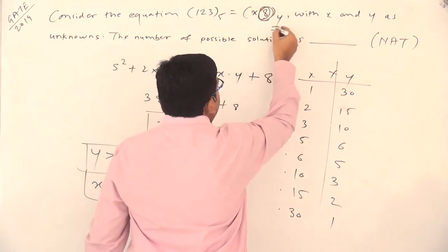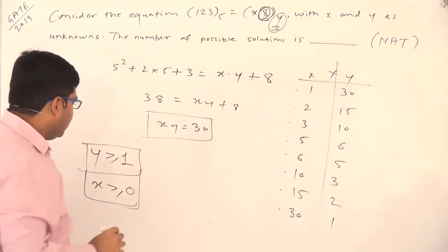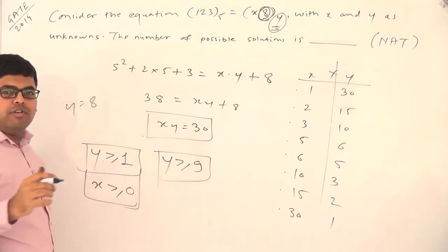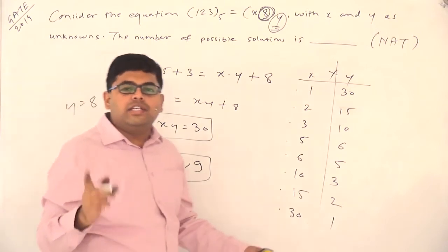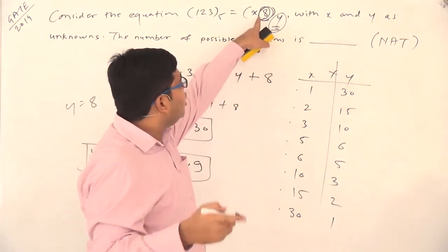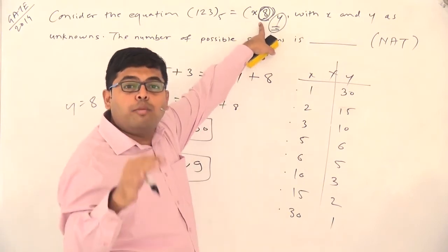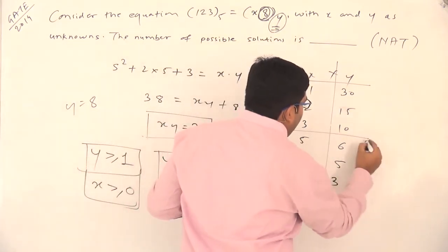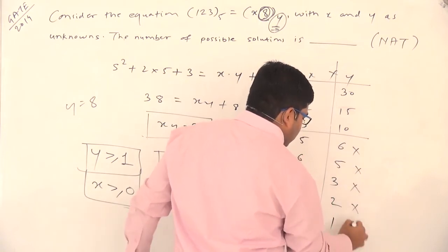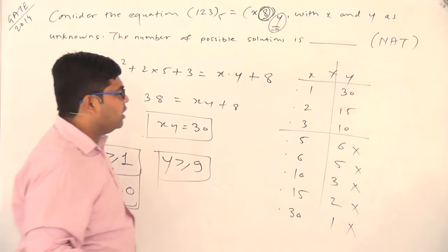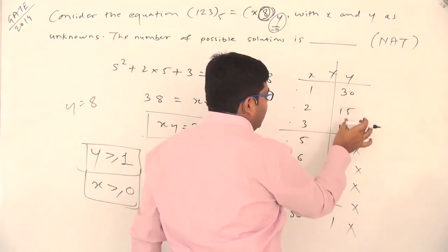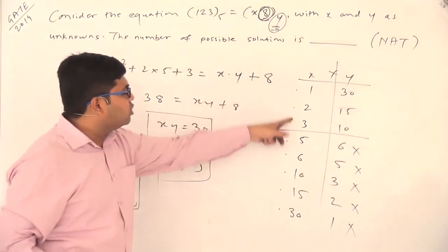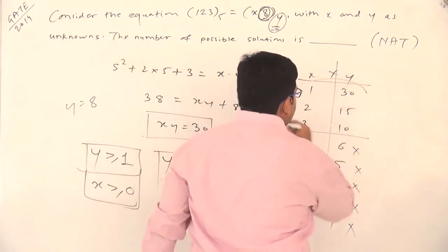Because 8 is a digit present in the number, the minimum value of the base must be 9. If y equals 8, the system becomes octal and the highest digit allowed is 7 — 8 is not allowed. So y must be greater than or equal to 9. Therefore y = 6, 5, 3, 2, and 1 are not allowed. Only y = 30, y = 15, and y = 10 are valid, as all are ≥ 9.